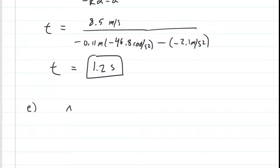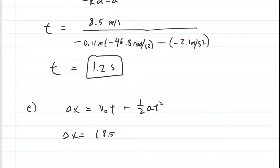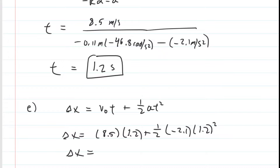Part E wants us to calculate how far the ball slides. This is a straightforward kinematics formula: we know the time, the initial linear velocity is 8.5 meters per second, and the linear acceleration is negative 2.1 meters per second squared. Plugging those in, we get a distance of about 8.7 meters. That's the correct answer for part E.